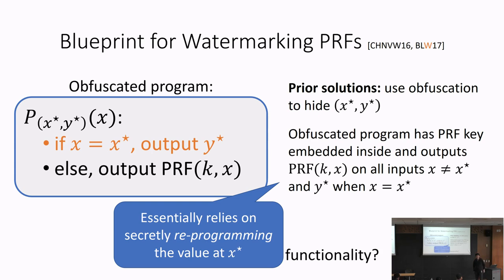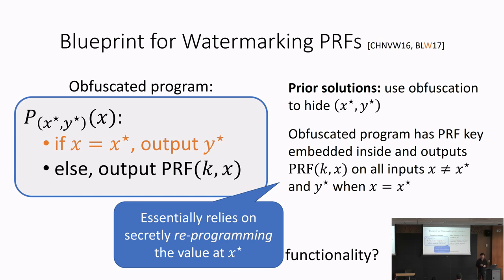Why do we need to derive x* from the input-output behavior rather than picking a fixed x*? The reason comes from a nuance in the security game — the adversary is allowed to make marking oracle queries, seeing marked circuits of its choosing. If x* is shared across many circuits, the adversary can extract x* using the marking oracle. That's why x* must be derived from the input-output behavior of the program itself — so it is different for every watermarked program.